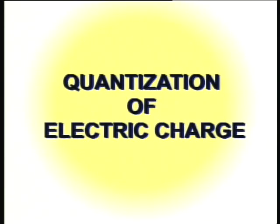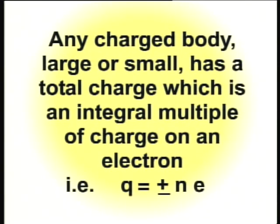Now we can discuss two very important properties of electric charge. The first is quantization of electric charge. Quantization of electric charge means that any charged body, large or small, has a total charge which is an integral multiple of the charge on an electron — that is, Q = ±ne. This means Q can be ±1e, ±2e, ±3e, or ±ne.